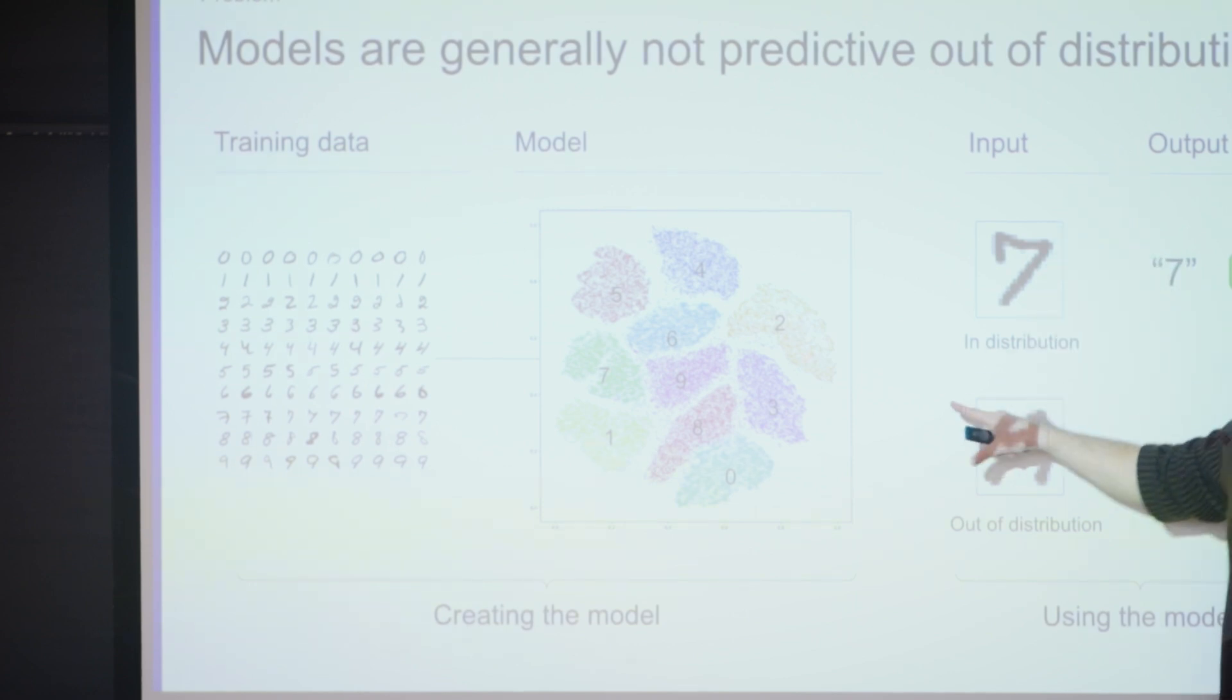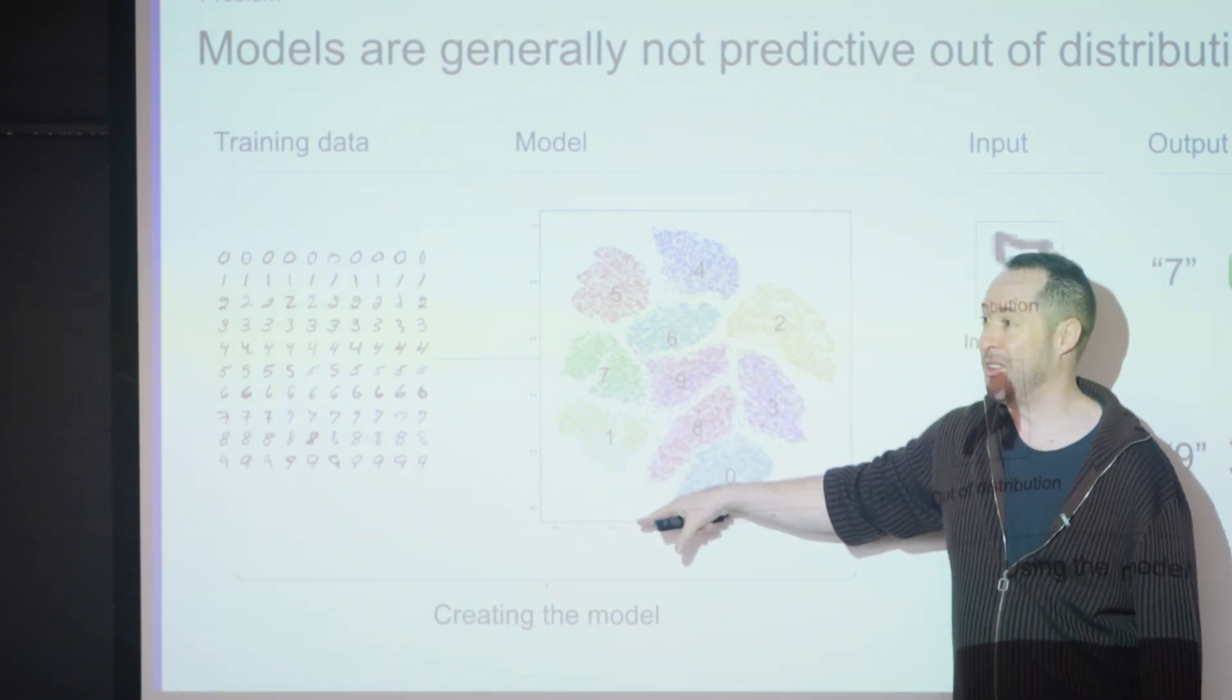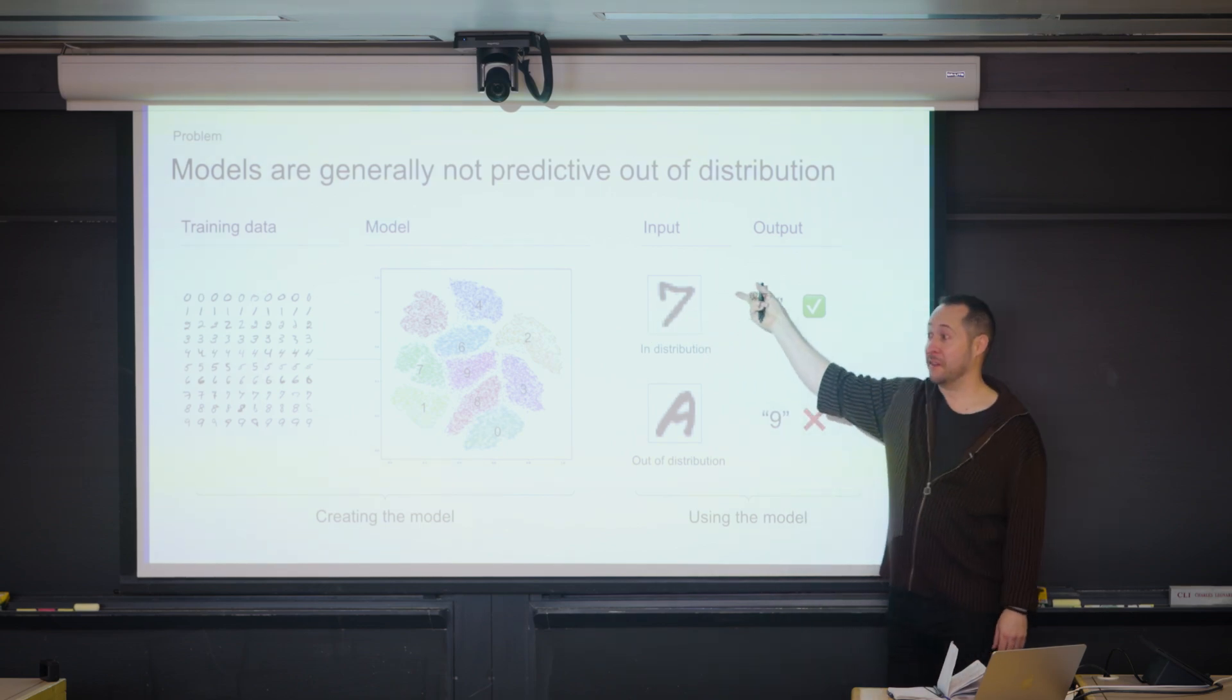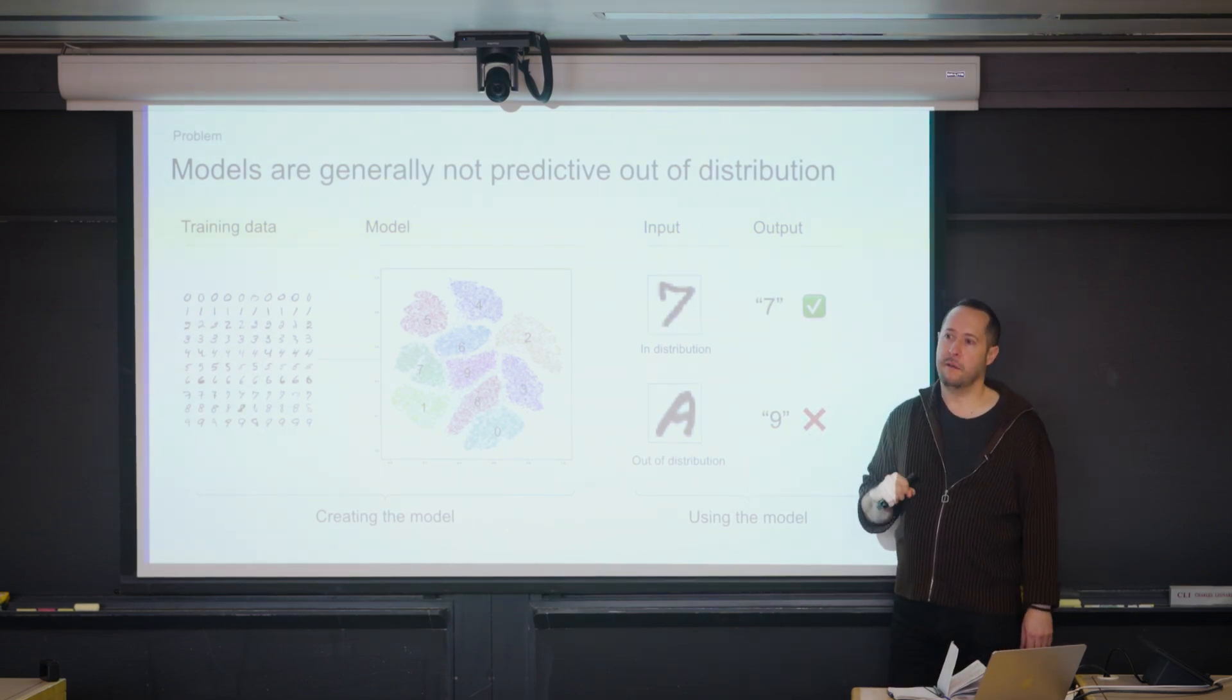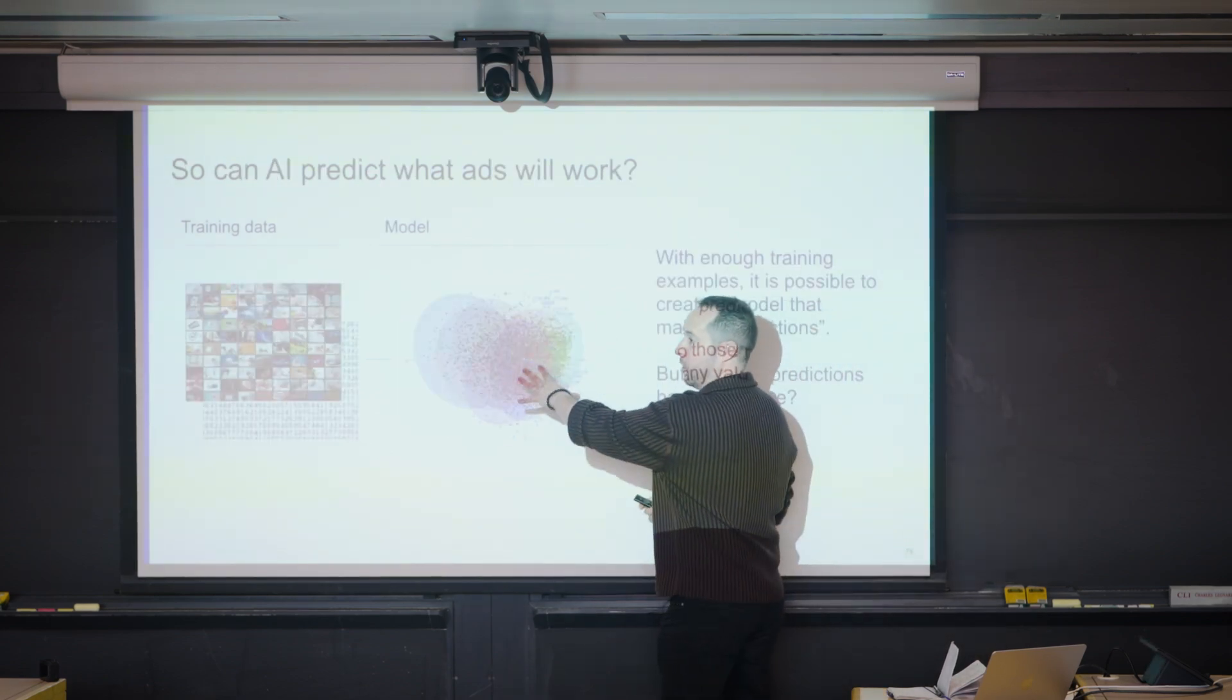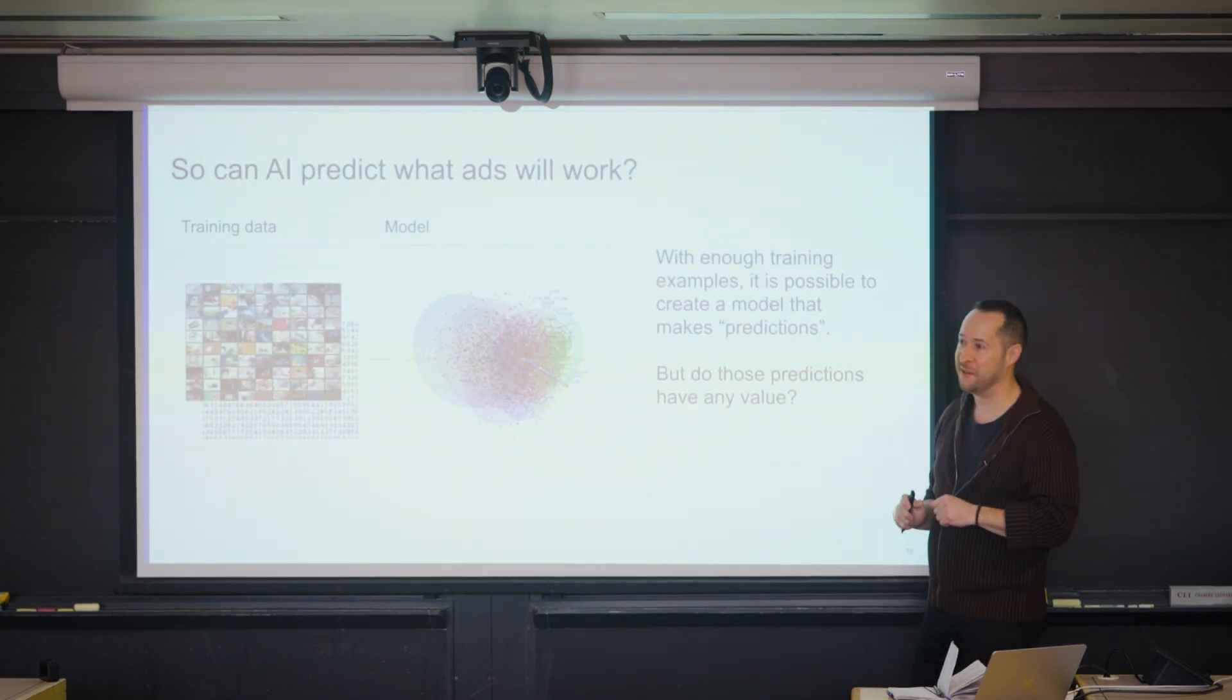But here's the thing: it's not very good if you give it something out of distribution. The distribution of all of its training data was the numbers zero through nine written in handwriting. There were not letters A through Z in there, for example. So now you give it an A and it's going to confidently say number nine or some other silly answer, because it's out of its distribution. So if you're going to make a claim like I can predict what ads are going to work, you have to establish that the model is trained on a relevant domain distribution.